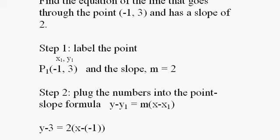And that's step 2. We plug the numbers into the point-slope formula, which is y minus y1 equals m times x minus x1. And when we do that we get this expression here.